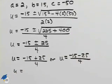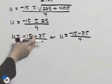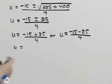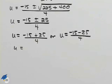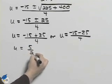One additional step allows us to figure out the values for u. Negative 15 plus 25 is 10 over 4, which 10 fourths reduces to 5 halves.